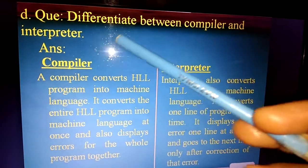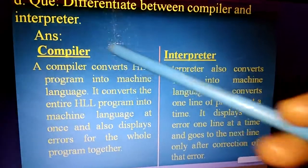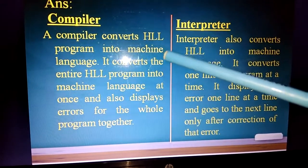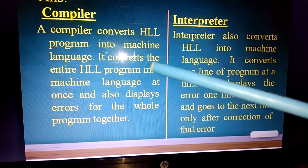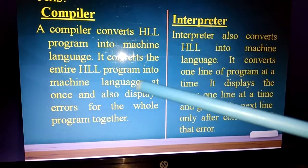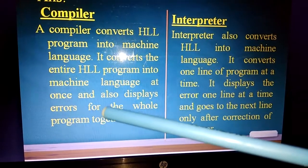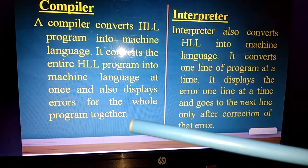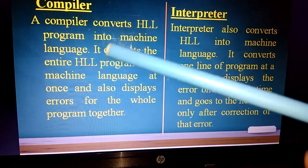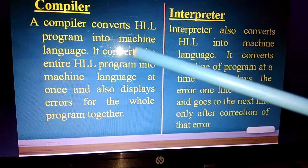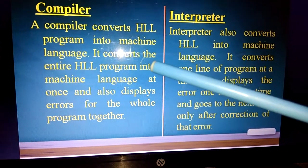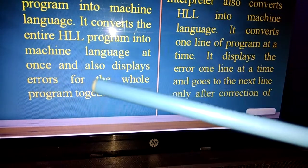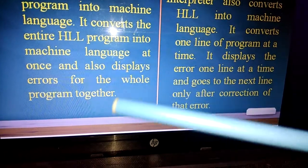Question D: differentiate between compiler and interpreter. A compiler converts a high-level language program into machine language. It converts the entire program into machine language at once and displays errors for the whole program together.